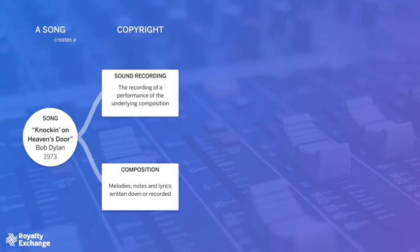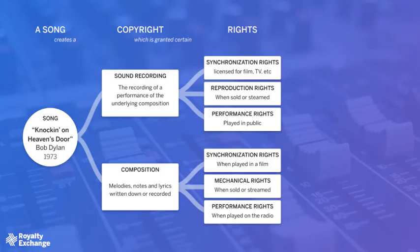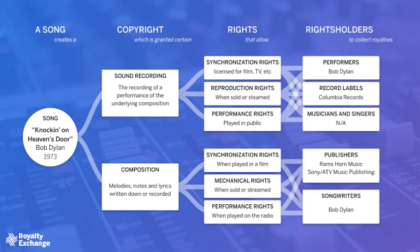But only the songwriter — in this case Bob Dylan — will collect the composition royalties for those versions other than his own. Now let's talk about what types of royalties pay to these two copyrights. Both the sound recording and the composition copyrights generate royalties based on how the songs and recordings are used. These include synchronization royalties, reproduction or mechanical royalties, and performance royalties. Both copyright holders earn royalties for these uses. There are also different entities that collect and distribute the royalties — songwriters sign with publishers or use publishing administration services, and artists sign with labels or use distribution services.